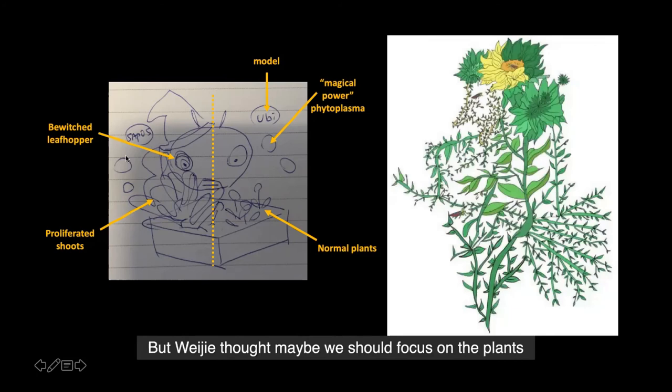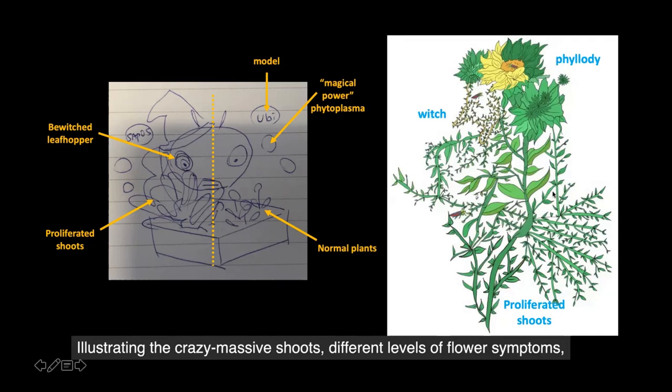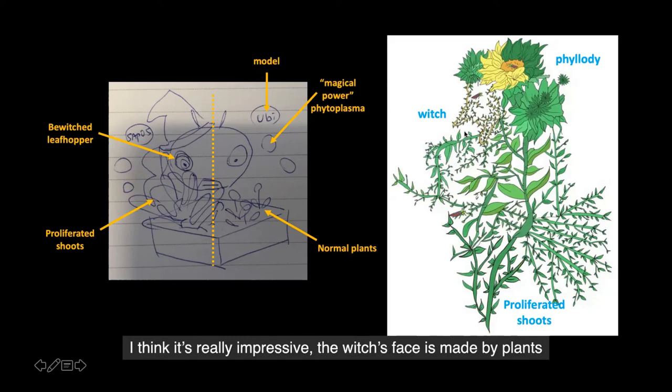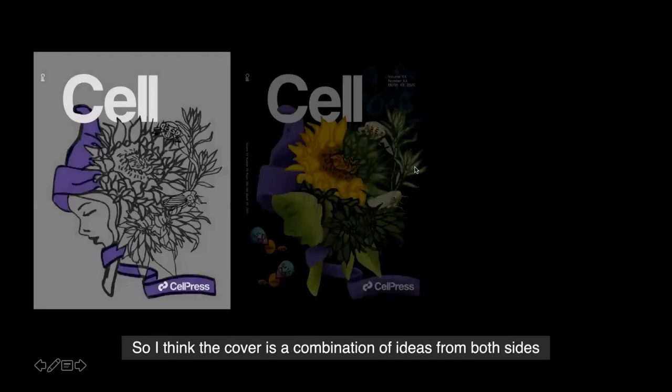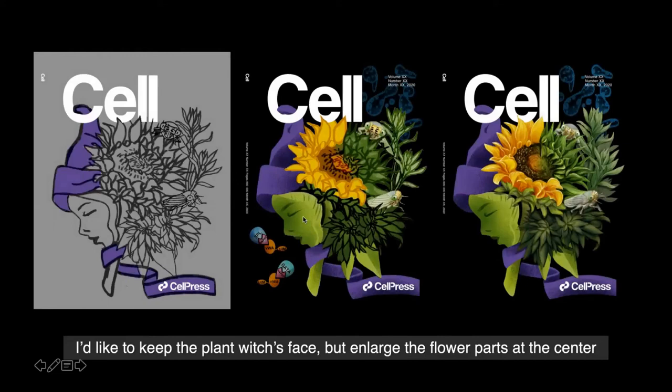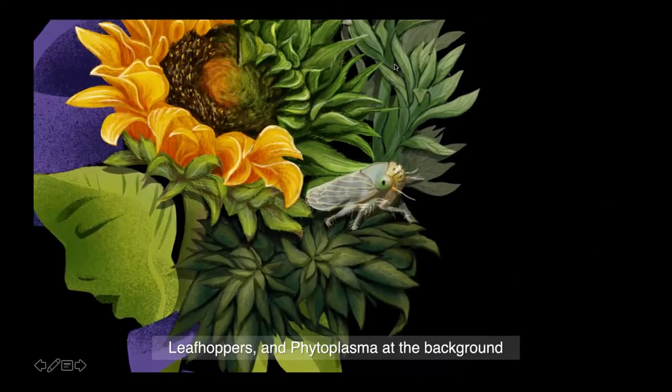Wei-Jie thought maybe we should focus on the plants, because his study is not really about leafhoppers. So Wei-Jie and his brother provided a nice draft illustrating crazy massive shoots and different levels of flower symptoms. I think it's really impressive — the witch's face is made by plants. So the cover is a combination of ideas from both sides: keeping the plant witch's face, but enlarging the flower parts at the center, with the flower symptoms, the proliferating shoots, leafhoppers, and phytoplasma at the background.